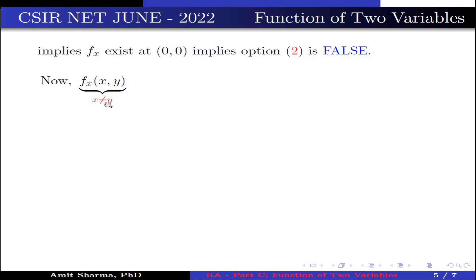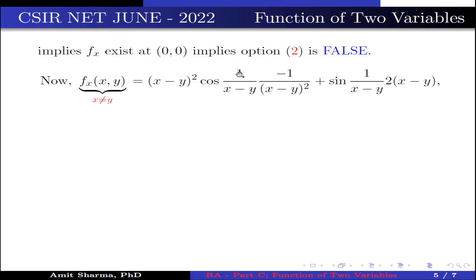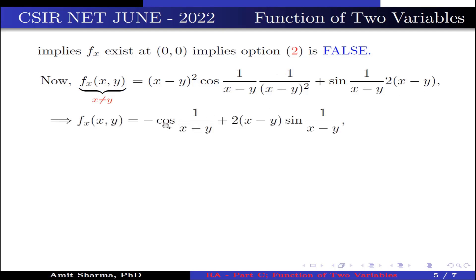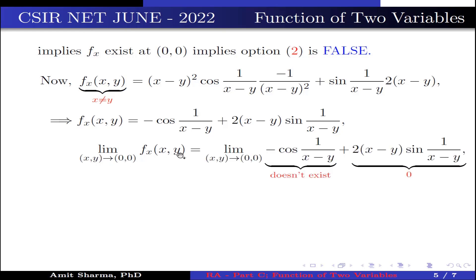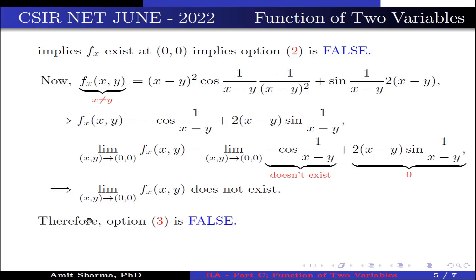For fₓ(x,y) when x ≠ y, differentiating partially with respect to x gives: −cos(1/(x−y)) + 2(x−y)·sin(1/(x−y)). Taking the limit as (x,y) → (0,0): the second term tends to 0 but the limit of −cos(1/(x−y)) does not exist. Therefore the limit of fₓ(x,y) does not exist as (x,y) → (0,0), and option 3 is false.